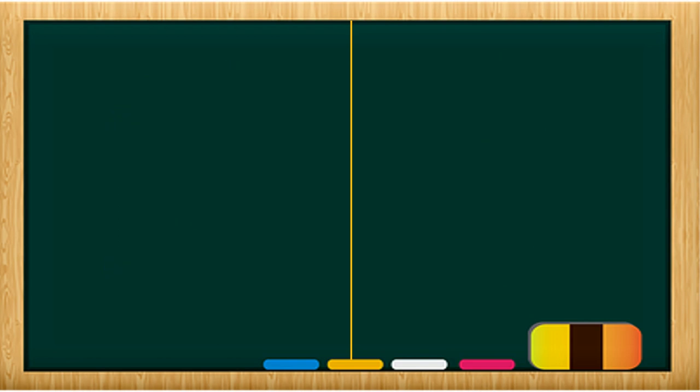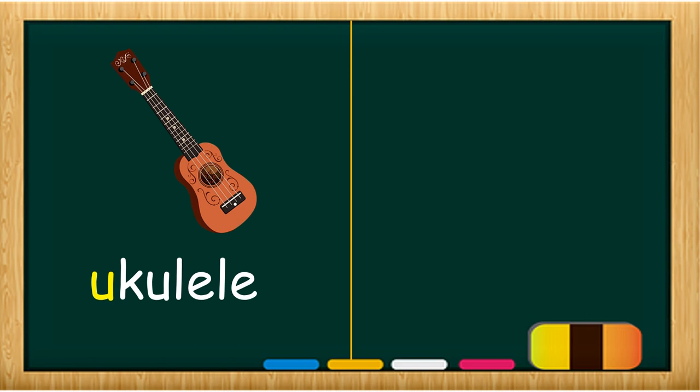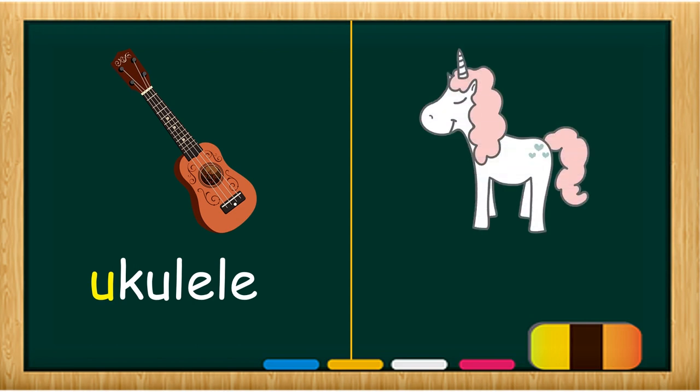Now, another sound of vowel U is U, same sound as you pronounce the letter. U, ukulele. U, unicorn.